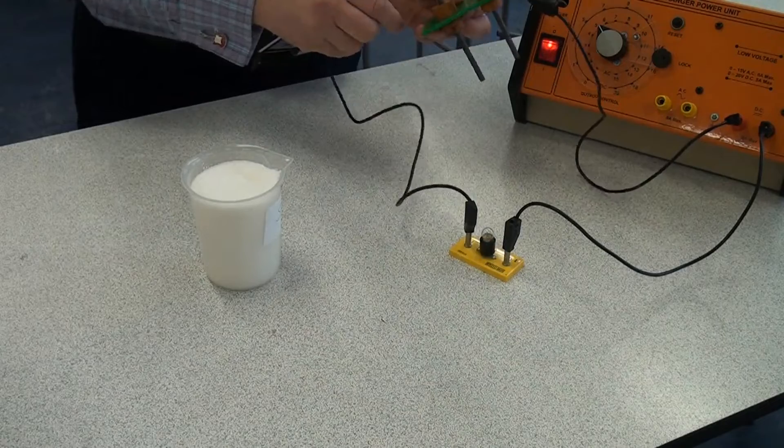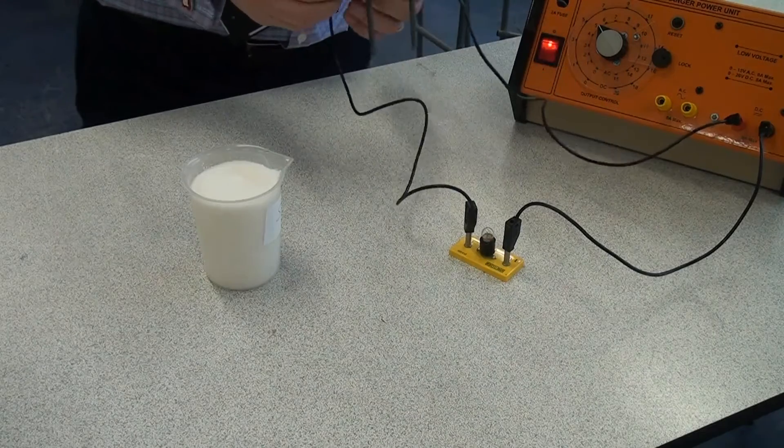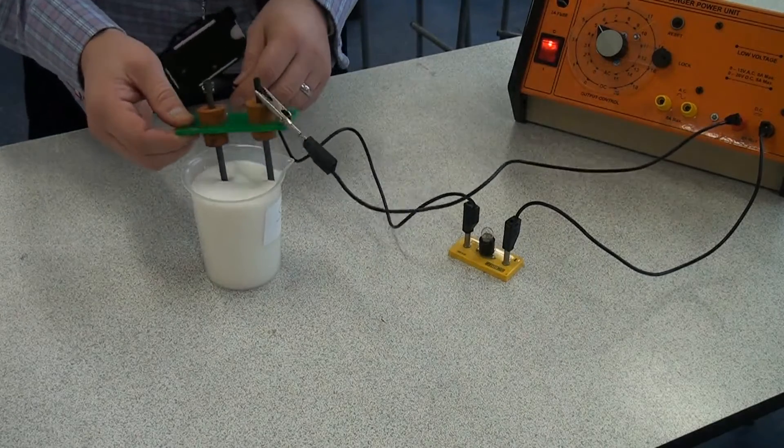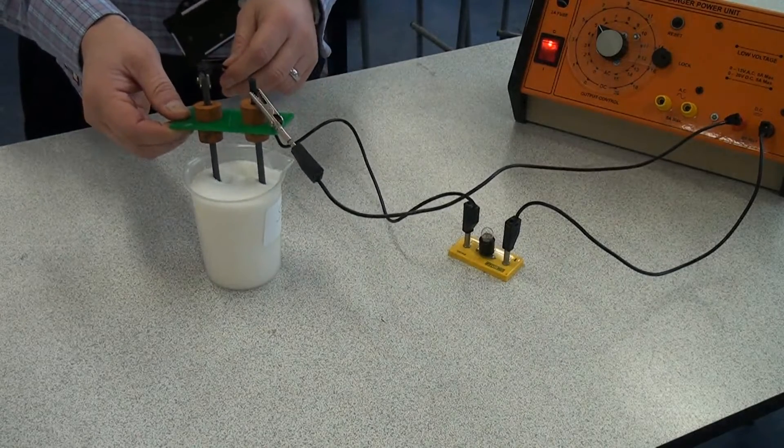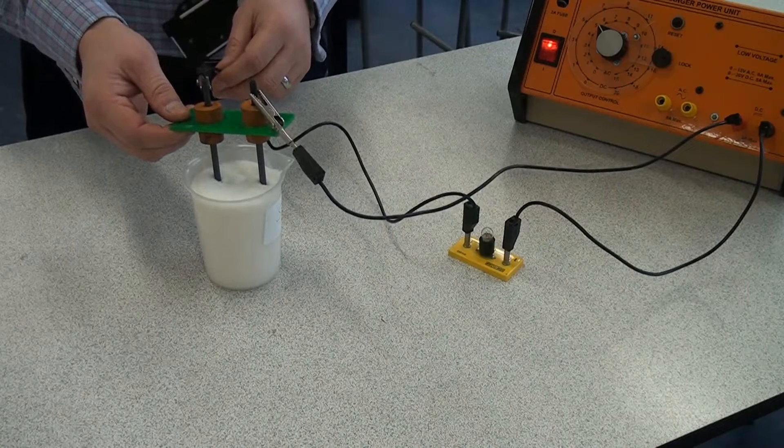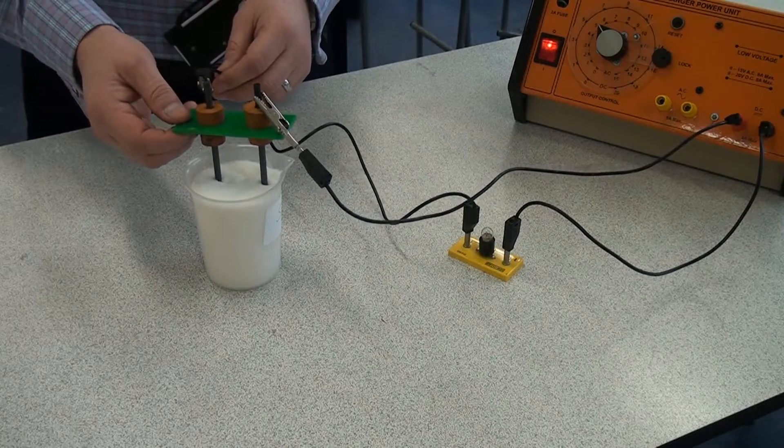So we've got a good circuit there and I'm going to put the electrodes in the solid sugar to see if we can get it to conduct electricity. And as you can see the bulb doesn't light up so small covalent compounds do not conduct electricity when solid.